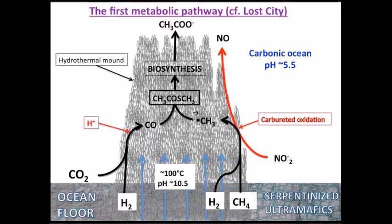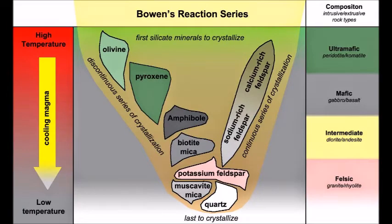As the alkaline vents spewed their chemicals, ultramafic ocean crust, which is rock containing mostly iron, magnesium oxide, and potassium, below the vents underwent the process of serpentinization. You see, as lava cools, minerals are formed within it, called the Bowen Reaction Series, including